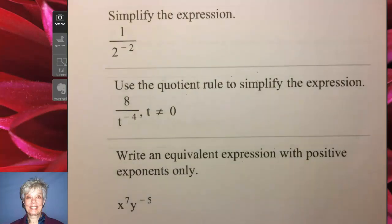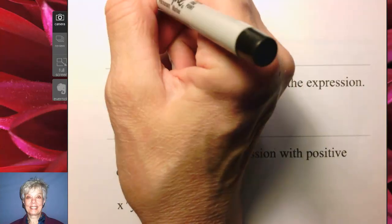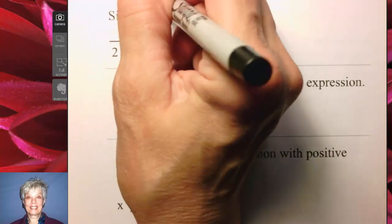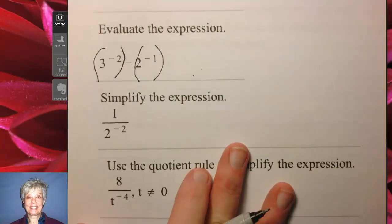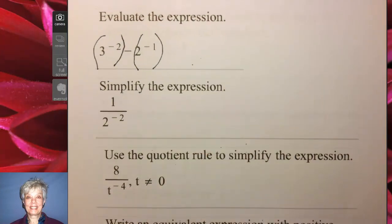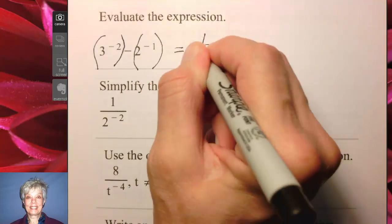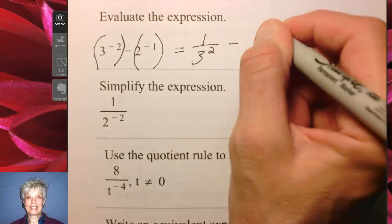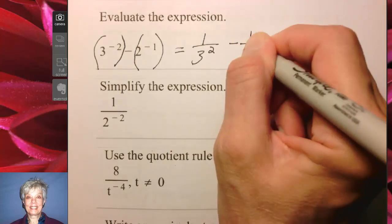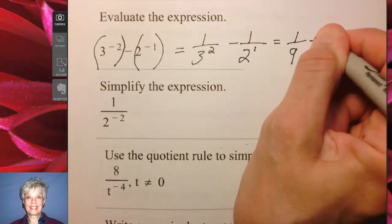Here we have 3 to the negative 2 power minus 2 to the negative 1 power. That's going to be 1 over 3 squared minus 1 over 2 to the positive 1, which gives us 1 ninth minus 1 half.